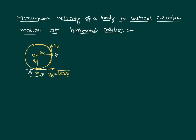Let us consider the bottom position as A and the horizontal position as B. We take point A as our reference point. According to the law of conservation of energy, energy is always conserved — it is neither created nor destroyed, it just converts from one form to another. Therefore, total mechanical energy at point A shall be equal to total mechanical energy at point B.